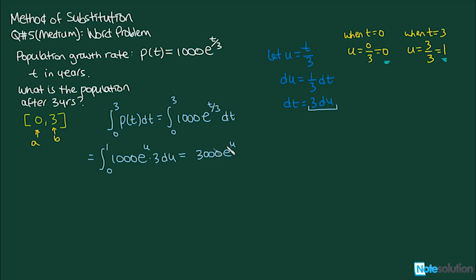But e^u, taking the derivative of that, we have du here, that's just e^u. So we've got that with this new interval that matches with this variable u here. Then simply substituting, we've got 3000 e to the power of 1 minus 3000 e to the power of 0 which is equal to 3000(e - 1).